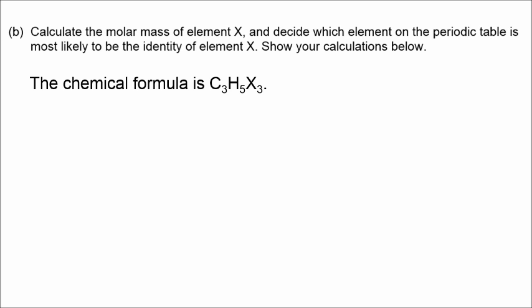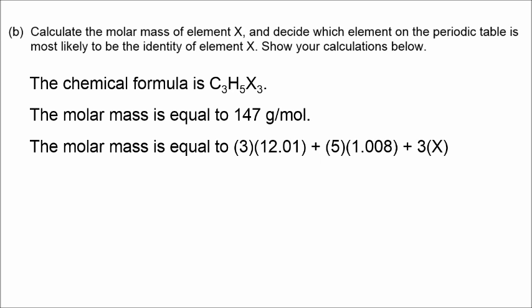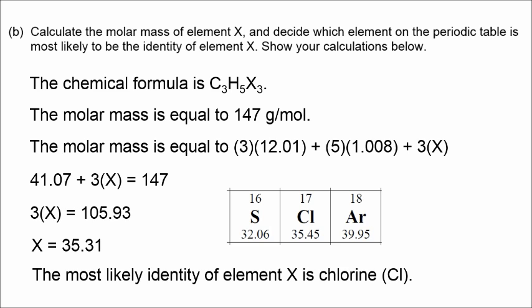And we're going to need to use that for figuring out the identity of the mystery element X. So 147 grams per mole. If we know that the formula is C3H5X3, and we know that that's 147 grams per mole, if we look at just the carbon, it's 12.01 times 3. Hydrogen, 1.008 times 5, and then X, the identity of the mystery element, its molar mass, times 3. Okay, so 41.07 is the math for what I know, plus 3X equals 147. When we solve for X, X equals 35.31. A quick glance on the periodic table tells us that the most likely identity of this mystery element is chlorine, because the mass is around 35.